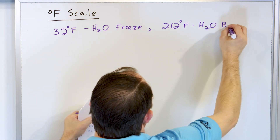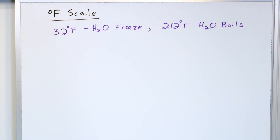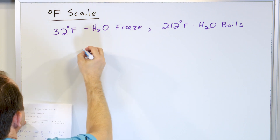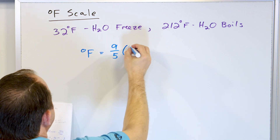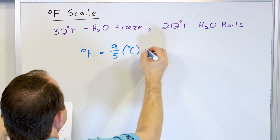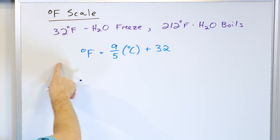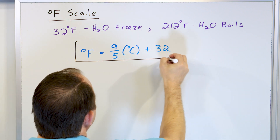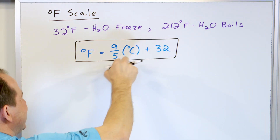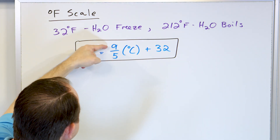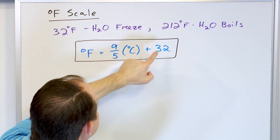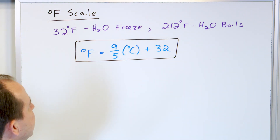There is an equation that can convert to Fahrenheit when you're given Celsius. Fahrenheit is going to be equal to the fraction nine-fifths multiplied by however many degrees you are in Celsius, and then you have to add 32. So if you know some temperature in Celsius, you put it into this equation, multiply by nine, divide by five — which is the same as multiplying by nine-fifths — and whatever you get as an answer, you add 32 degrees to it. Then you get Fahrenheit.